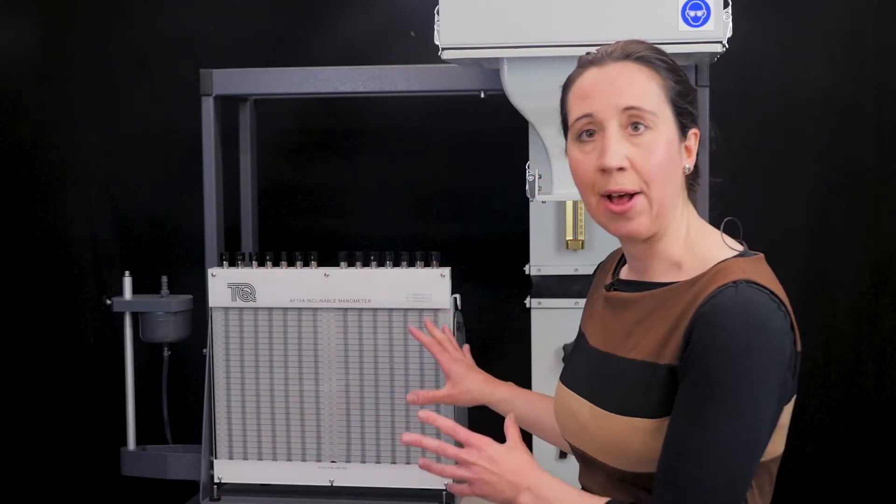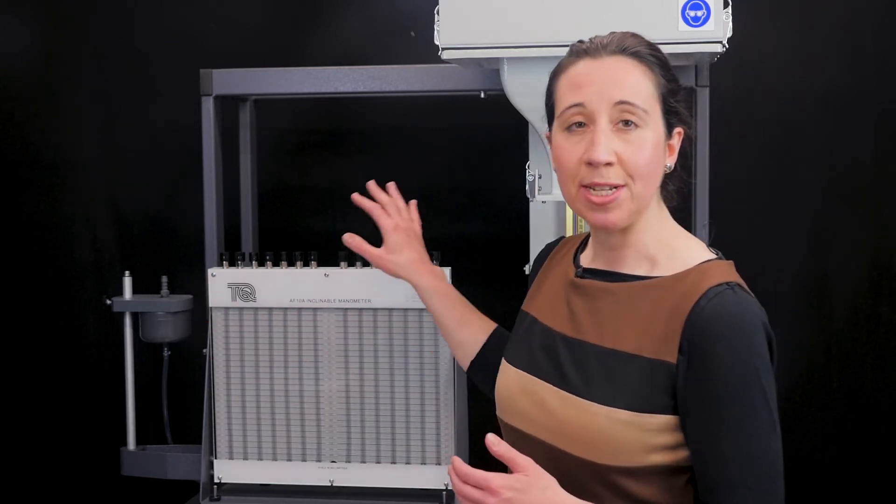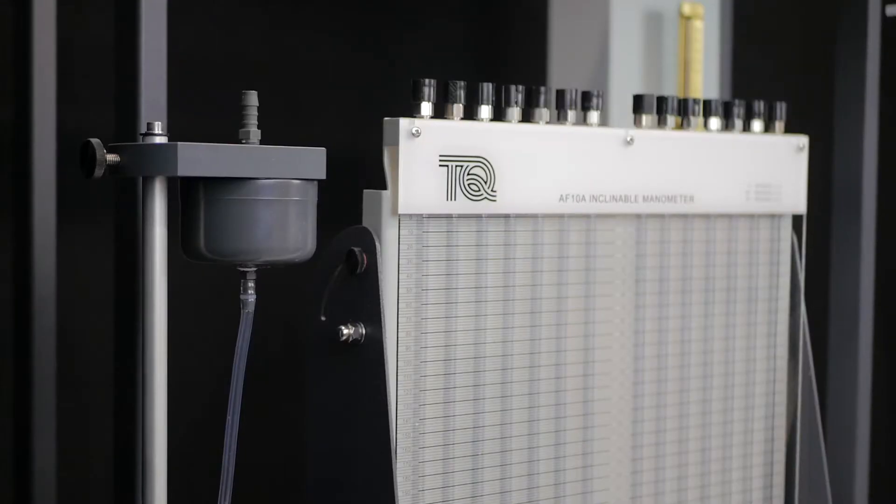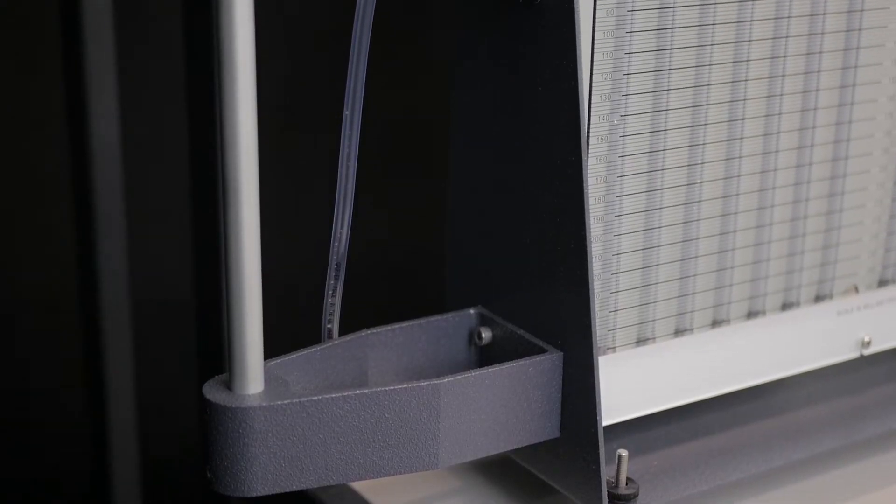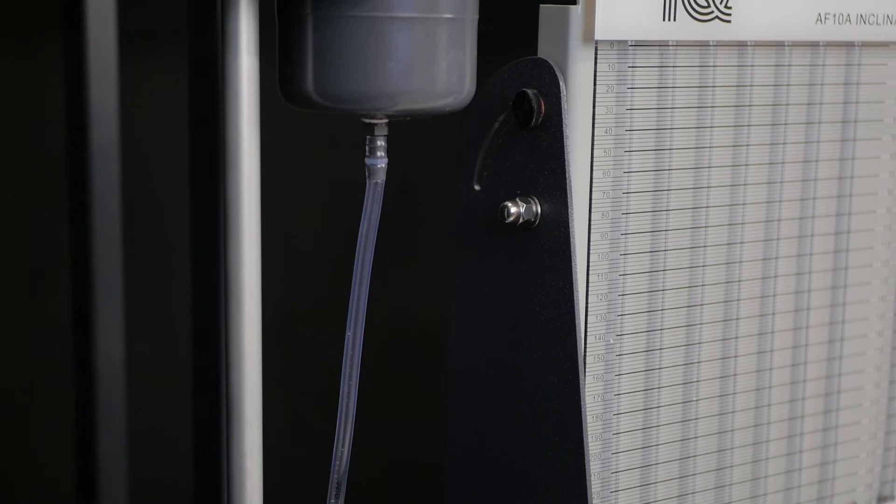Let's take a closer look around the multi-tube manometer. The 14 tubes are all open to the atmosphere at the top. They're connected to a common manifold at the bottom which then connects to a reservoir that you see here at the side.